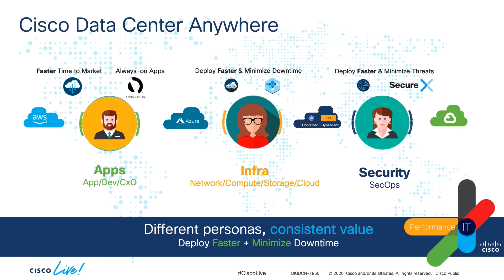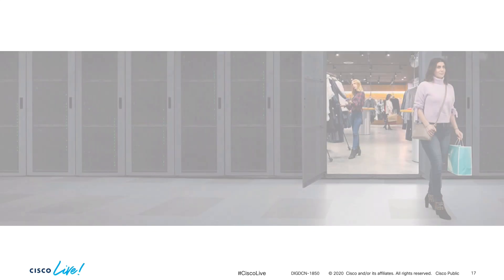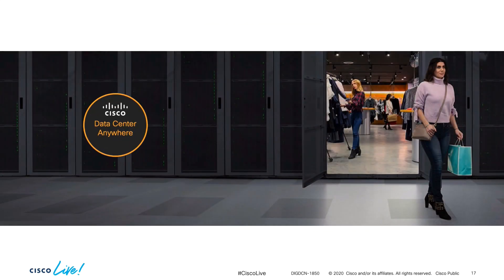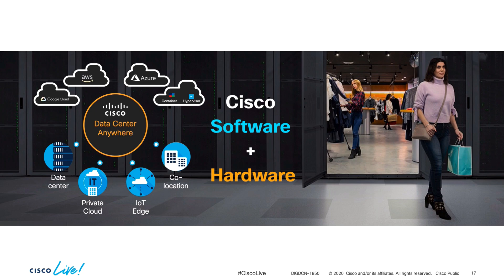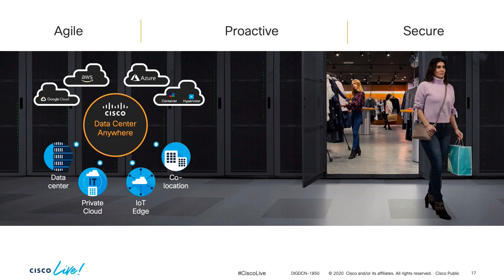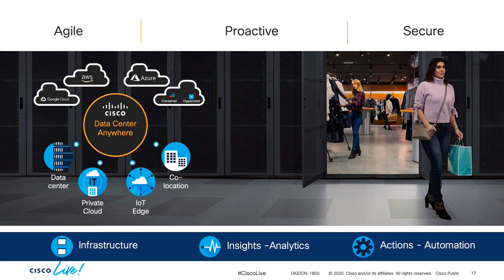In the end, the data center is no longer a large Tier 4 building with a lot of servers and storage. It lives on the edge, on the cloud, on containers, or even on non-Cisco gear. So we want to make sure that through Cisco hardware, software, or both, you can achieve those business outcomes consistently. We will enable agile, proactive, and secure infrastructure with a mixture of insights and actions.